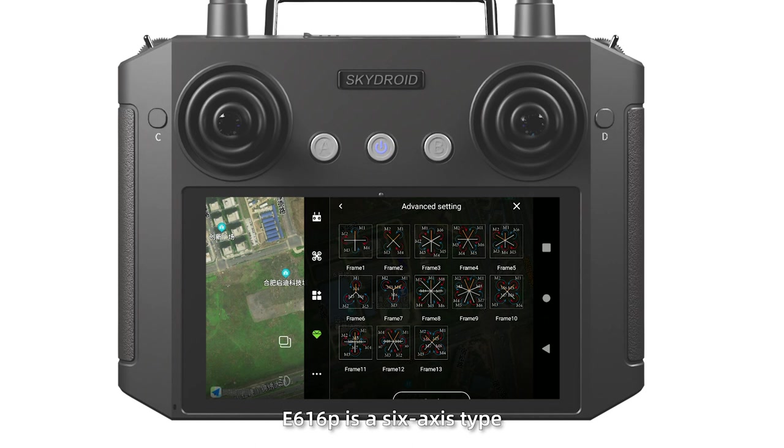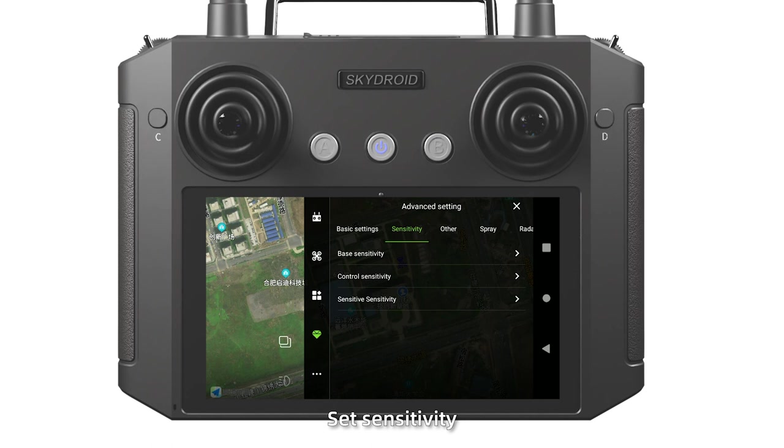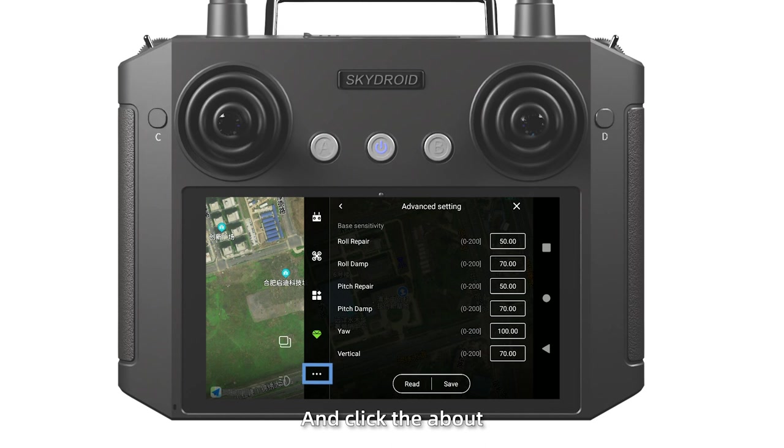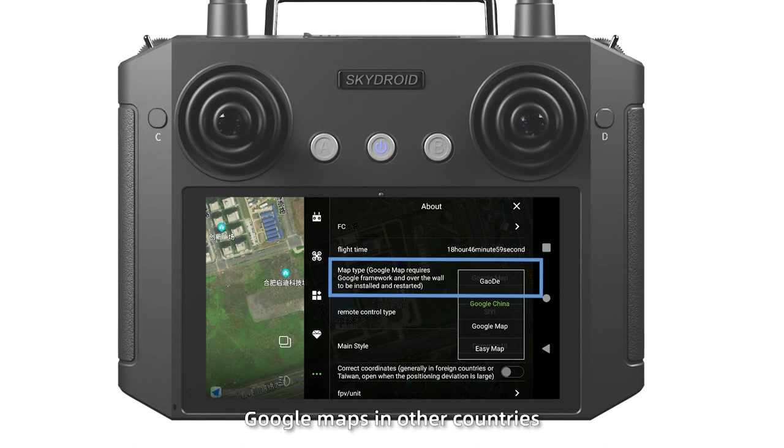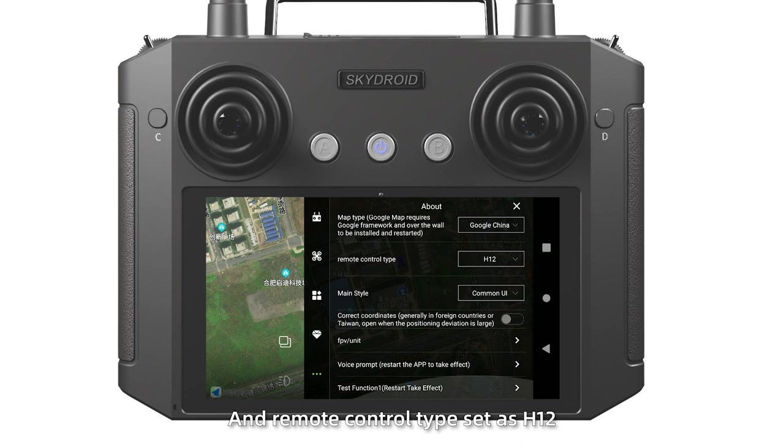Set sensitivity. Click base sensitivity, read and save. At the end, click the about. Map type: select Auto Navi maps in China, Google maps in other countries. And remote control type set as H12.